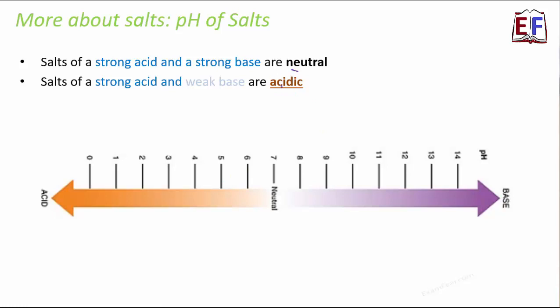In a similar way, if the salt is of a strong base and a weak acid, which is stronger base, and therefore overall, the salt would be basic in nature. It's very simple. The powerful dominates. If the acid is stronger, base is weaker, so overall, the salt would be acidic. If the base is stronger, acid is weaker, so overall, the salt would be basic.